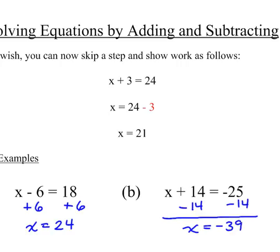So the next example involves multiplying and dividing. So 4x, remember, means 4 times x. So how do you get rid of multiplying by 4? You divide by 4. So both sides you end up dividing by 4.